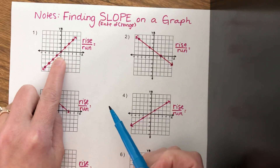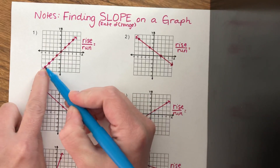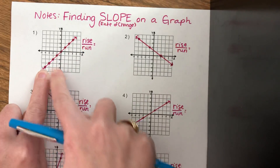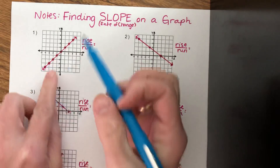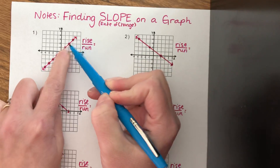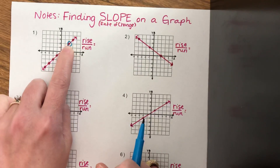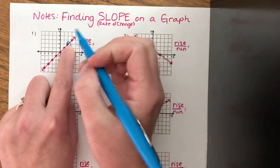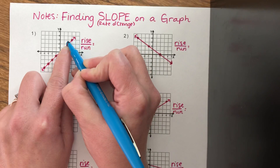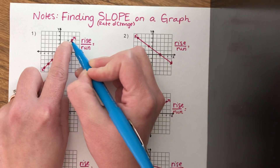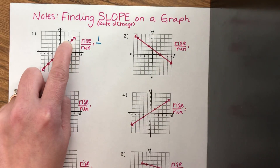Looking at this first one, I need to pick any two points to count between. I could pick the very bottom and the very top, but if you pick two points that have points in between them, you will have to reduce. I like to not have to reduce, so I'm going to pick two close points with no points in between. I always start from the bottom, and I count how much I went up to get to the next point — I went up once. Up is a positive movement, so my rise is one.